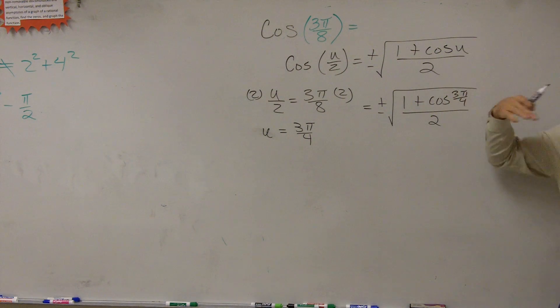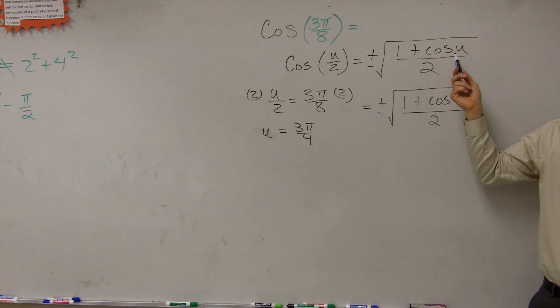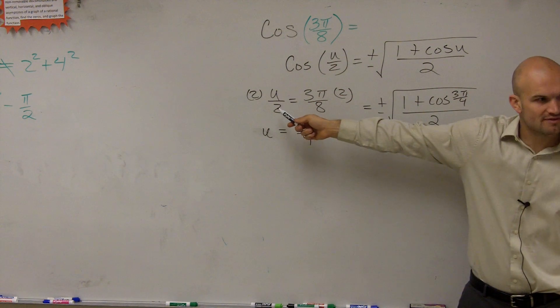Do you guys see that? The big mistake students do is they plug 3π/8 in for u. No, 3π/8 is equal to u divided by 2.